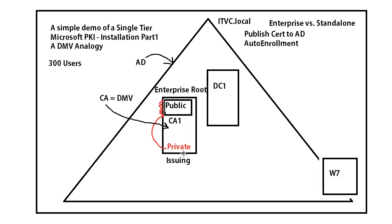Just like everybody knows where the local DMV is, there's something about that DMV that's private — only the DMV knows about it — that makes it official. We don't publish that private information out to everybody. So the CA equals the DMV: your certificate authority, your CA, which is the top of your PKI, is where you go to get your certificates from, just like you know where your DMV is to get your driver's license.